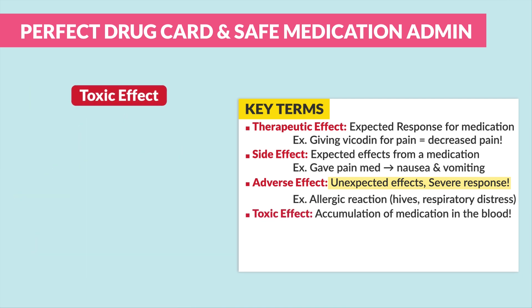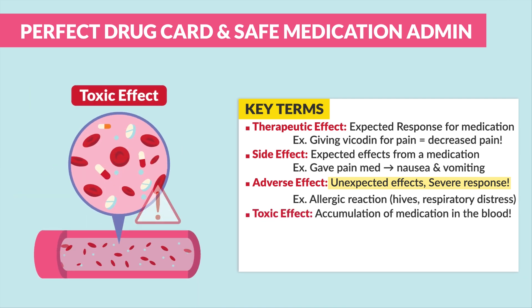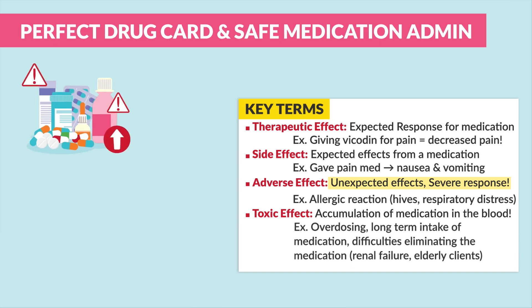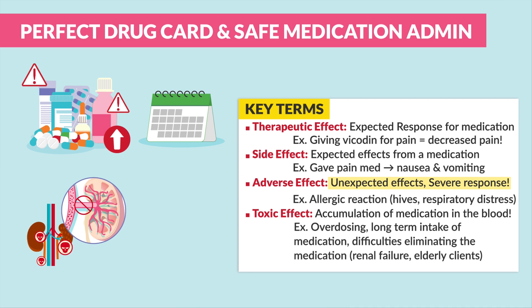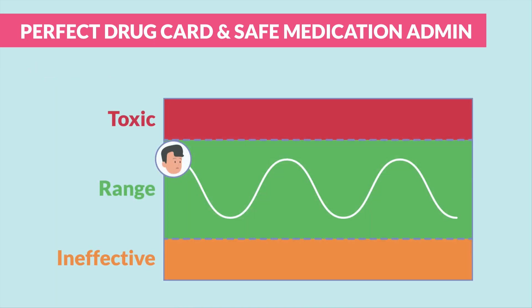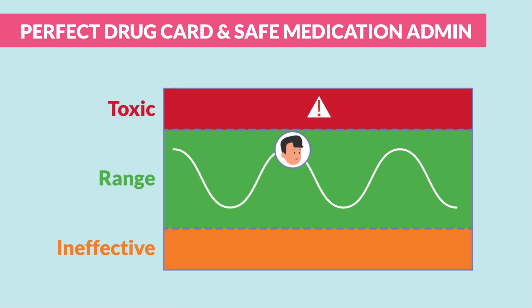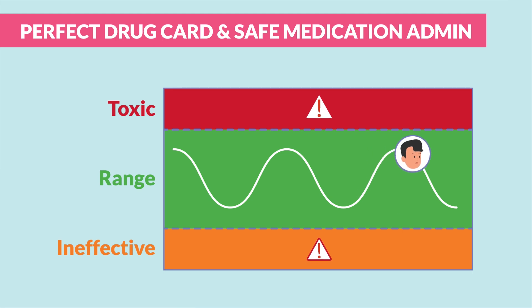The next big one is toxic effect, where we see an accumulation of medication in the blood. An example is overdosing on a medication, or long-term intake that can lead to toxicity, and even difficulties eliminating the medication due to renal failure or in elderly clients. We want our clients to be in the therapeutic range — not too much to be toxic, and not too little to be ineffective. Just a nice therapeutic range.